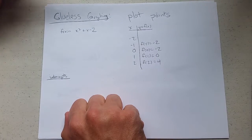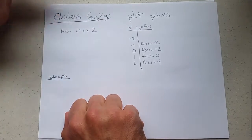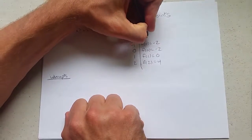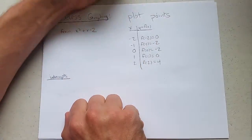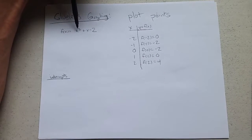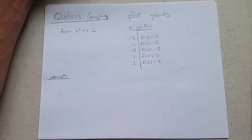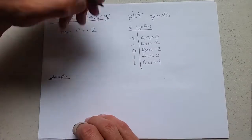And last up, plug in negative 2: we have 4 minus 2 minus 2, 0 again. Yep, looks like 0 again. Alright, so we're going to plot all these points out.